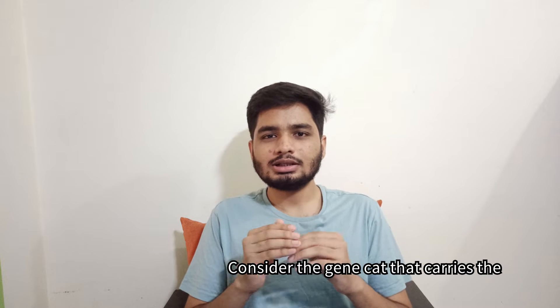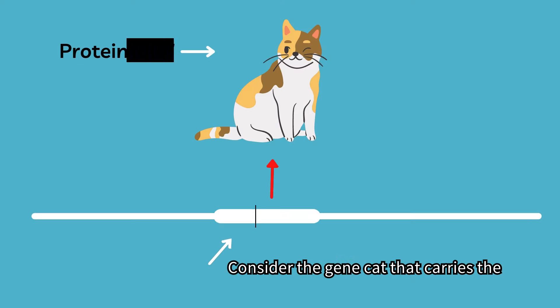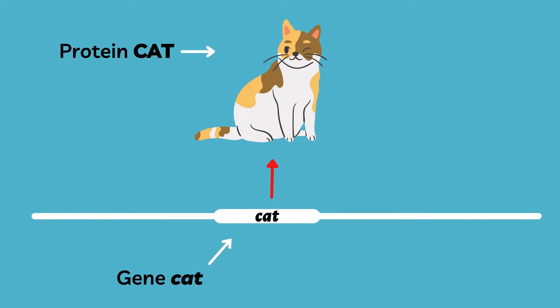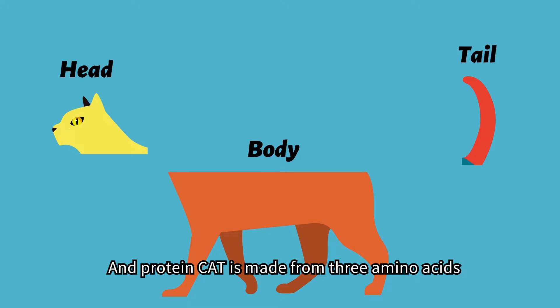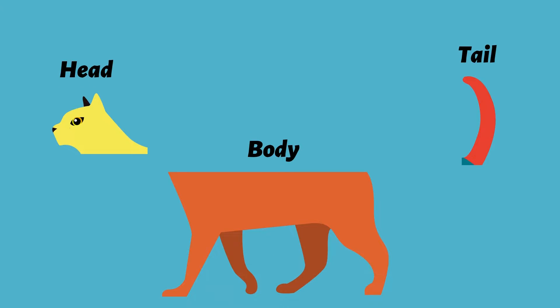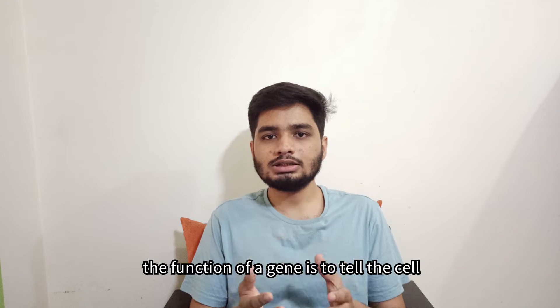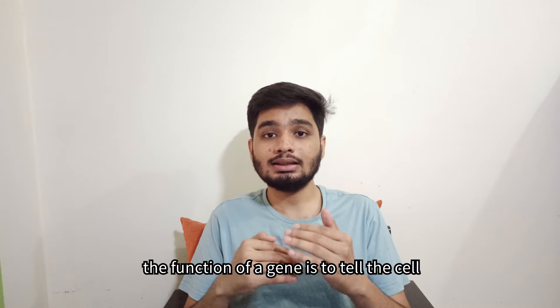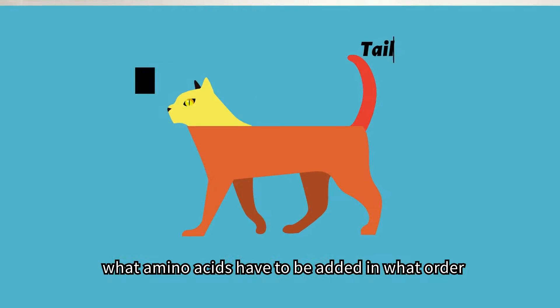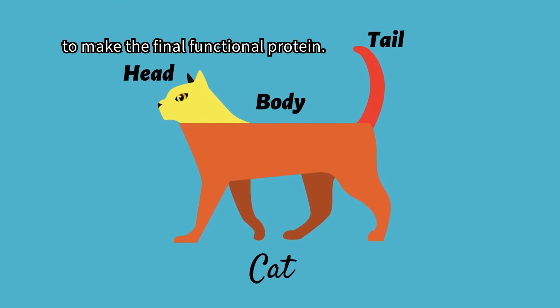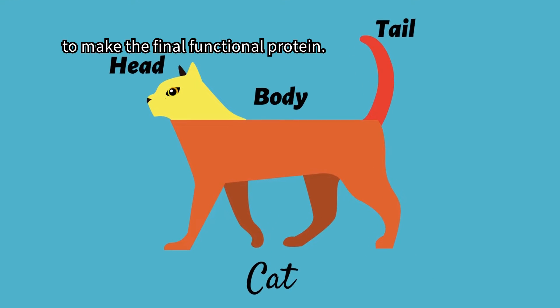To understand this simply, consider a gene 'cat' — it carries information to make the protein cat. Protein cat is made from three amino acids: head, body, and tail. So the function of gene cat is to tell the cell what amino acids have to be added, and in what order, to make the final functional protein.